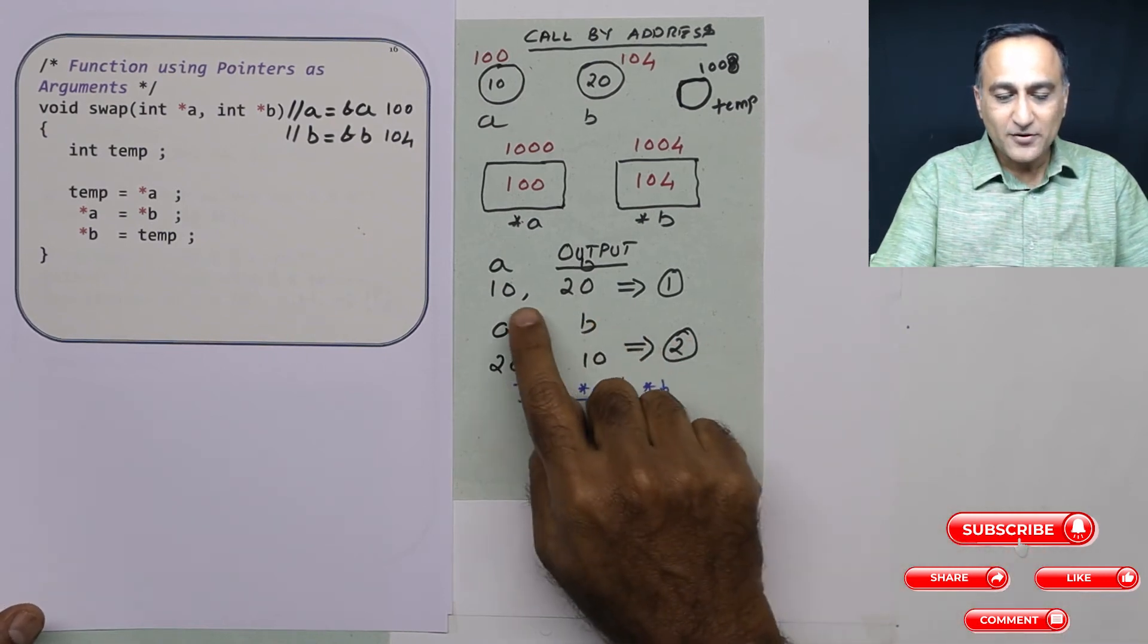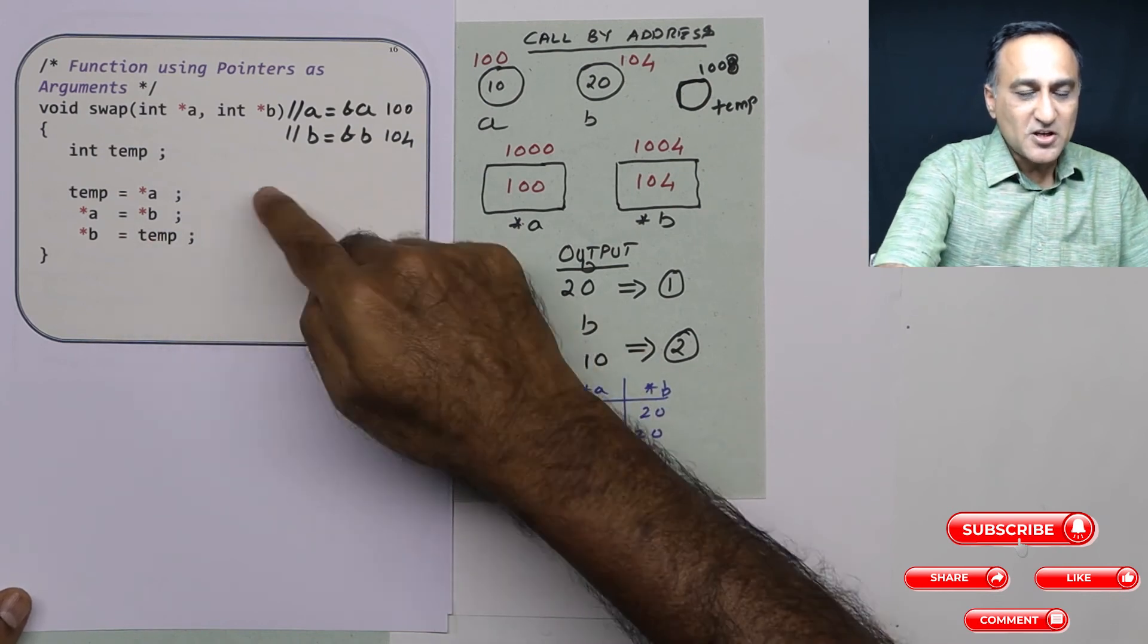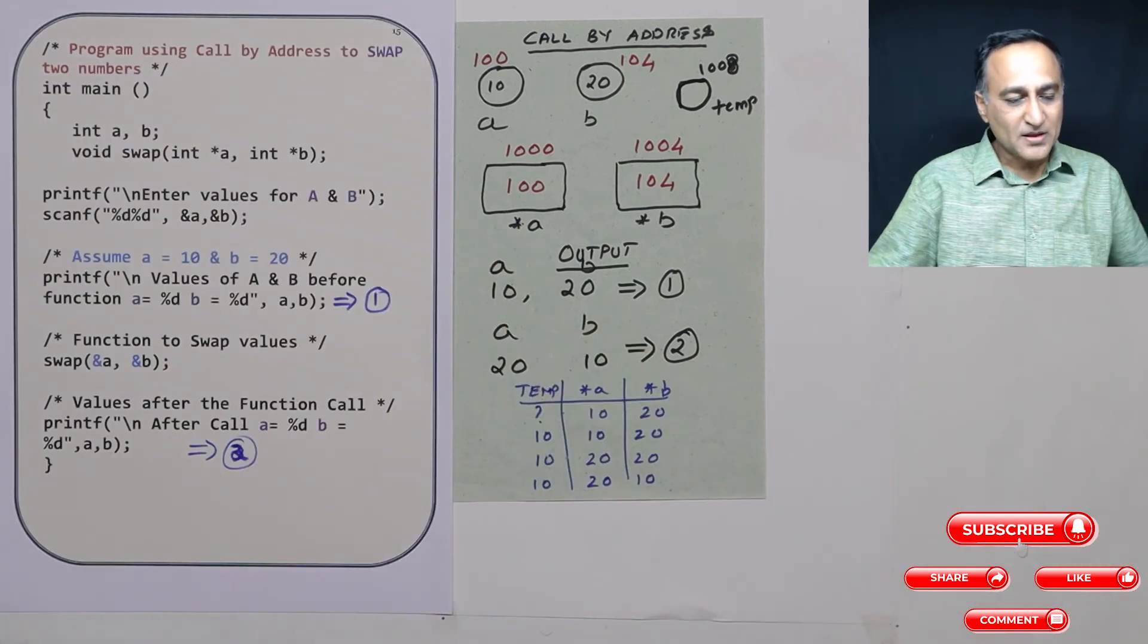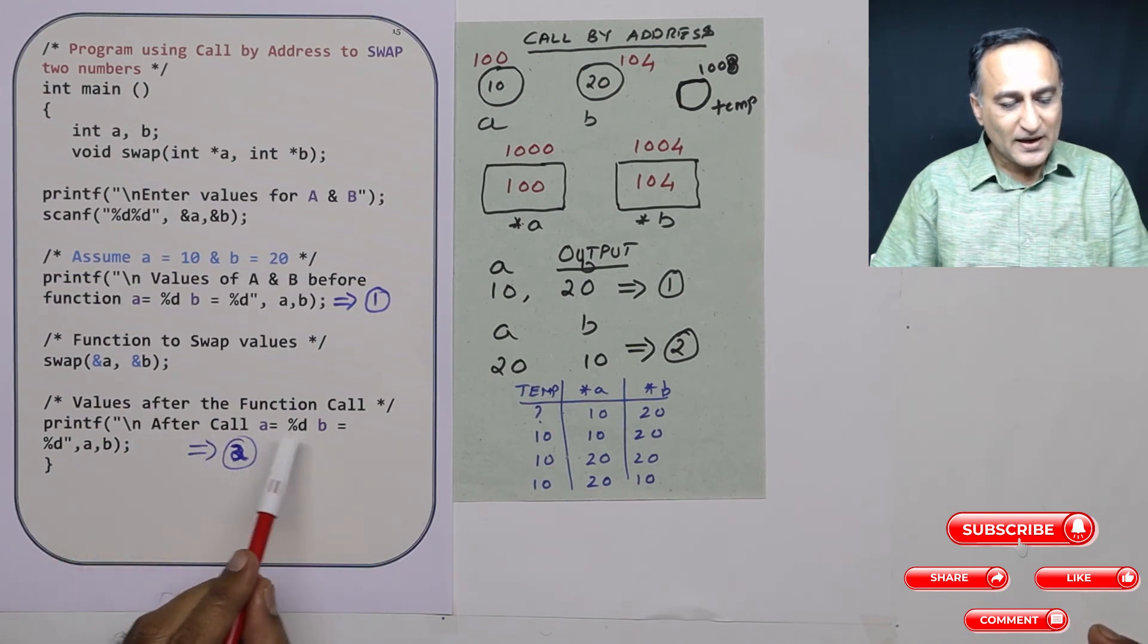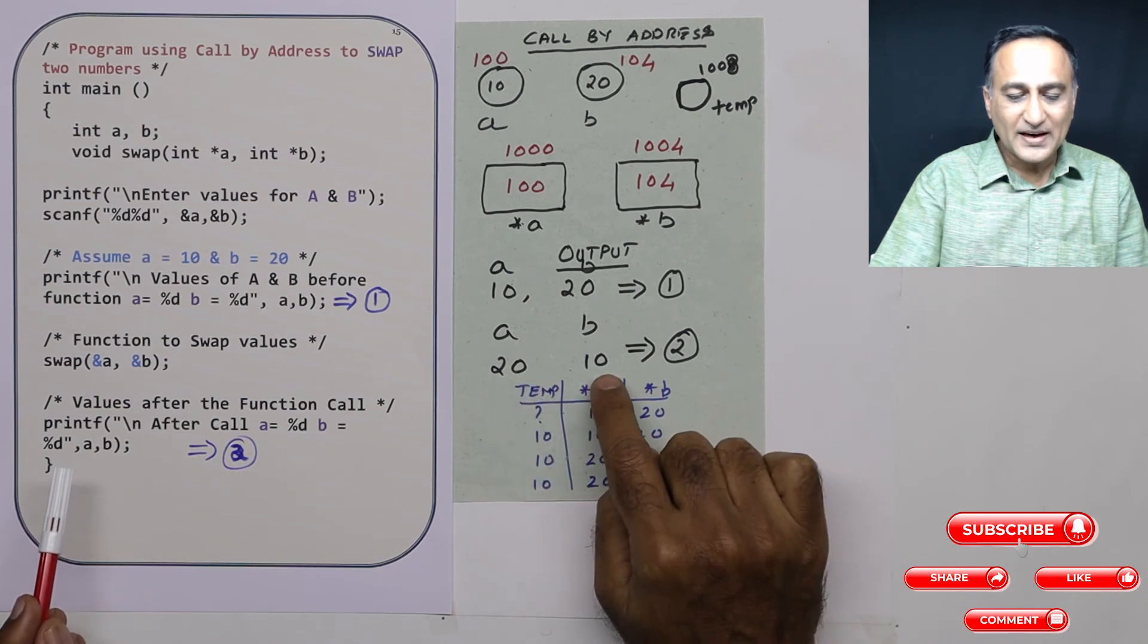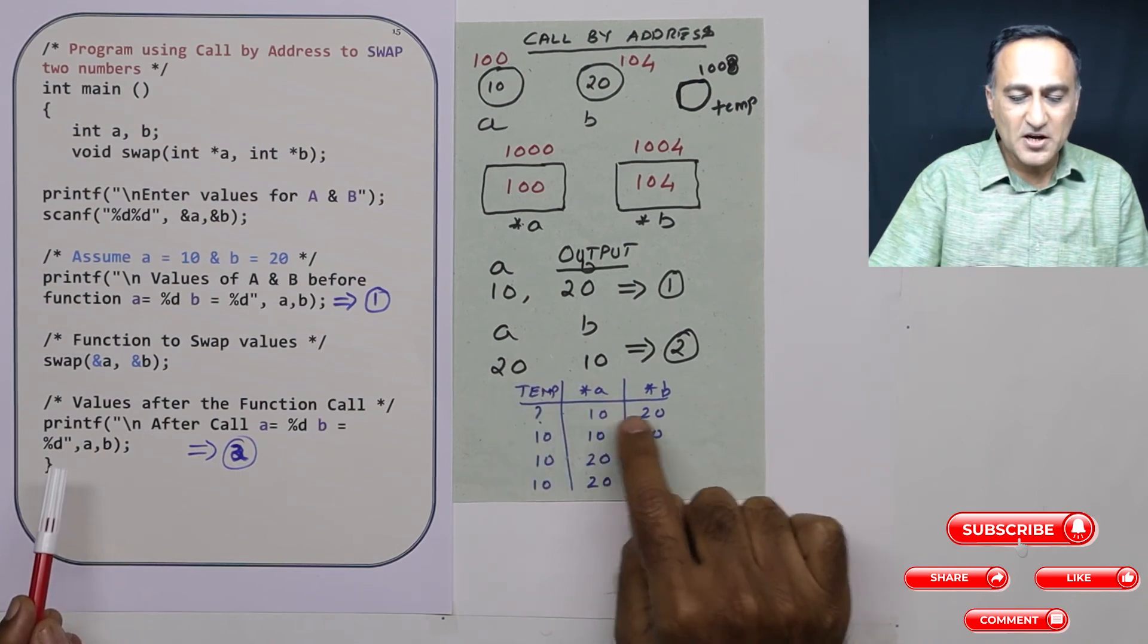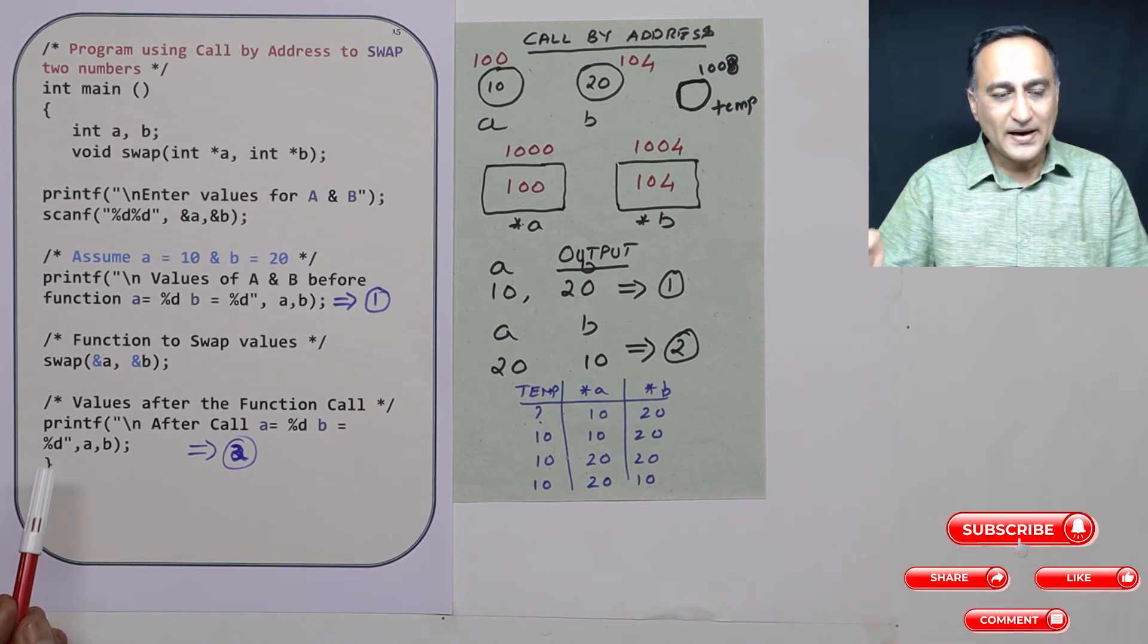How do we prove that? In the first output, it was 10 and 20. In this function, I have exchanged the values of a and b. So now when I'm going to print the values of a and b after the function call, it is going to print 20 and 10 because I have exchanged the values of a and b using call by address.